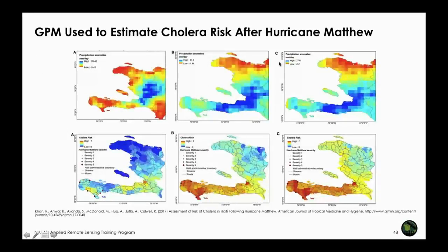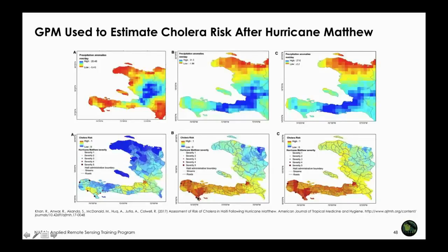Here is yet another example where IMERG precipitation was used to track cholera risk after Hurricane Matthew. The top shows the increase in precipitation due to Matthew, and based on that, the severity of cholera risk is derived. This has been validated with ground data, confirming that precipitation from IMERG helps look at post-storm health risks such as cholera.